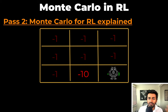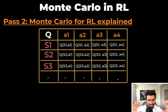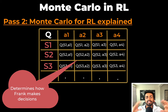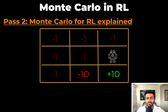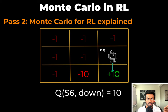Frank got to the goal, but how good were these actions? For every state-action pair, we can calculate the future reward in the Q-table. This Q-table is an insight into how Frank's brain is working and how Frank makes decisions. For example, in the second-to-last state, Frank was in state S6 and decided to go down, and the future reward became 10. So Q(S6, down) equals 10.